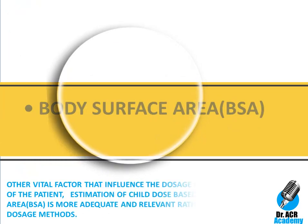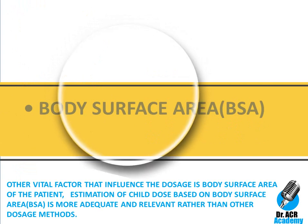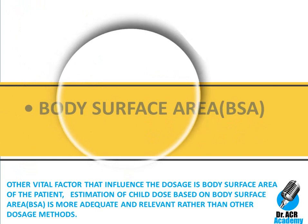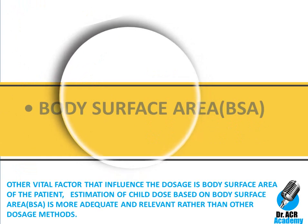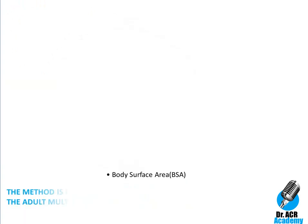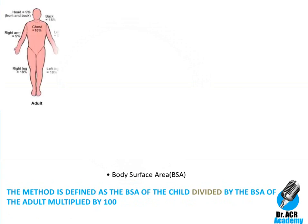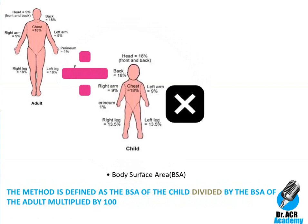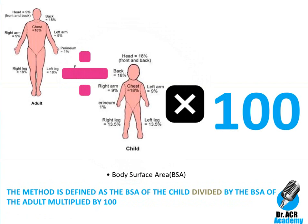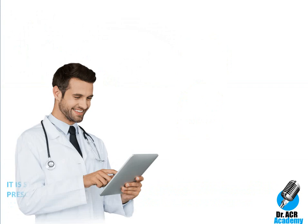Another vital factor that influences dosage is the body surface area (BSA) of the patient. Estimation of child dose based on BSA is more adequate and relevant than other dosage methods. The method is defined as: BSA of the child / BSA of the adult × 100. Body surface area is measured from the height and weight of the child. It is strongly advised to refer to the reference book before prescribing drugs to children.